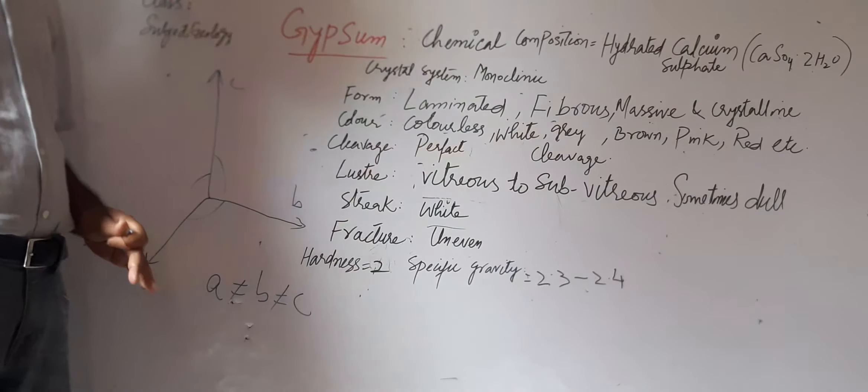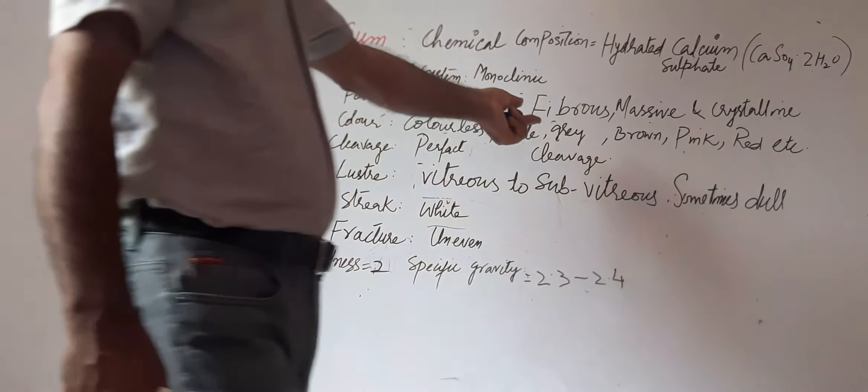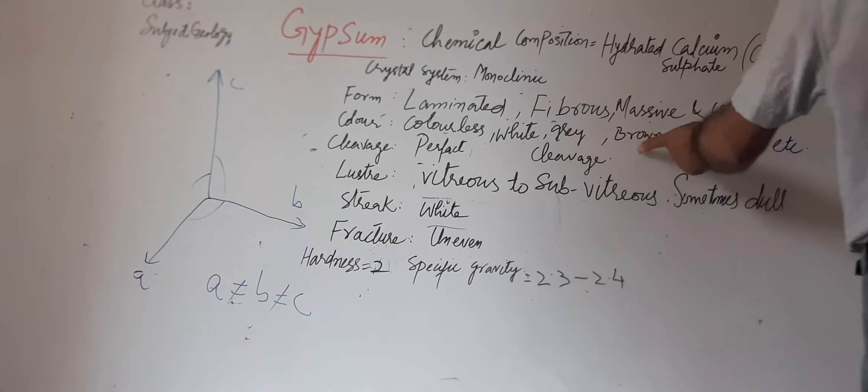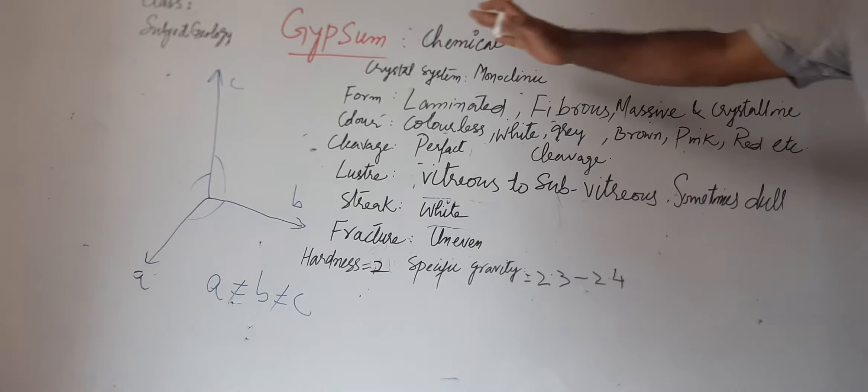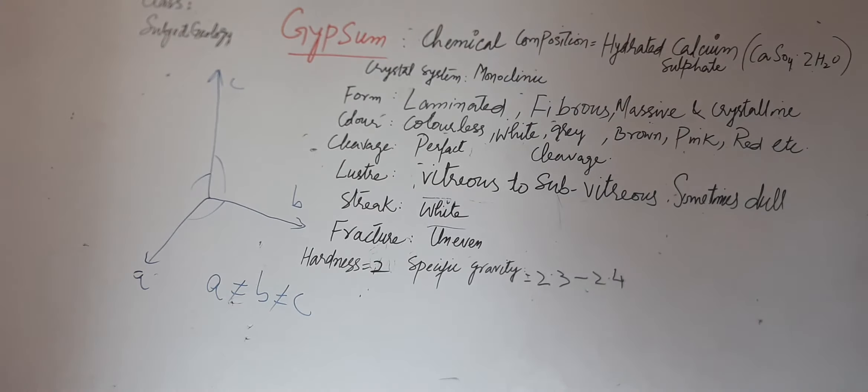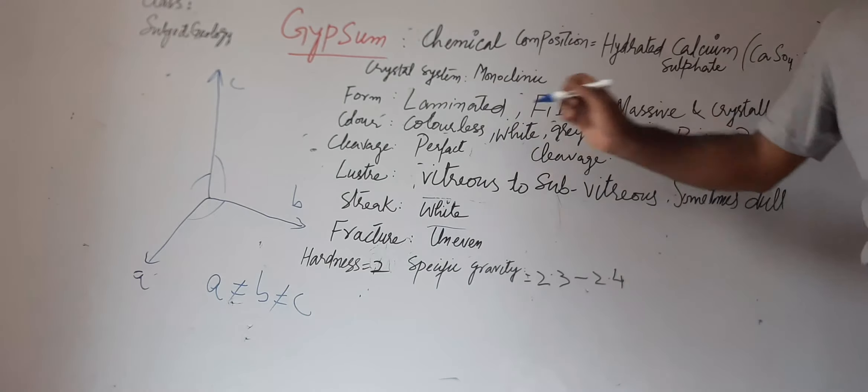White color, sometimes it is available in gray, also in brown, pink, red—these are the different colors by which we can identify the mineral gypsum.